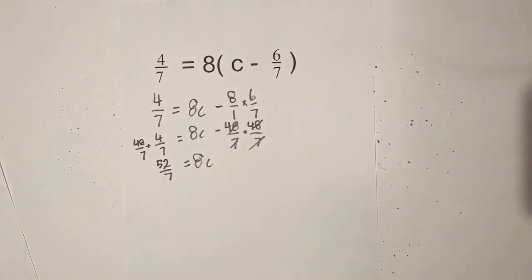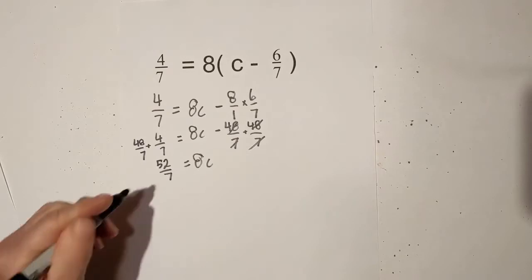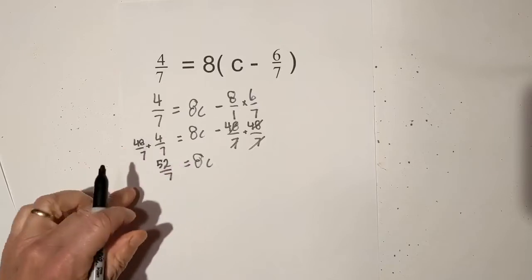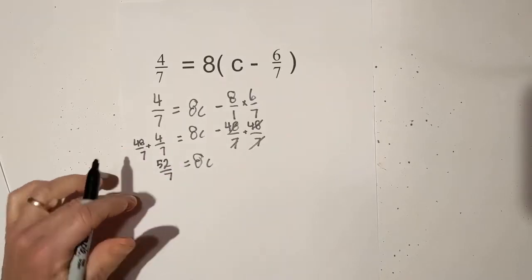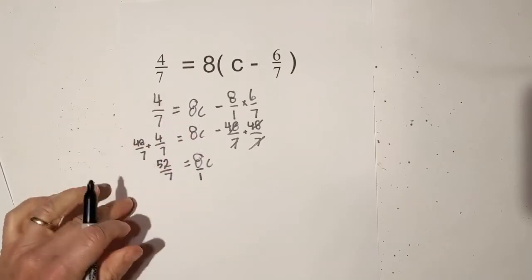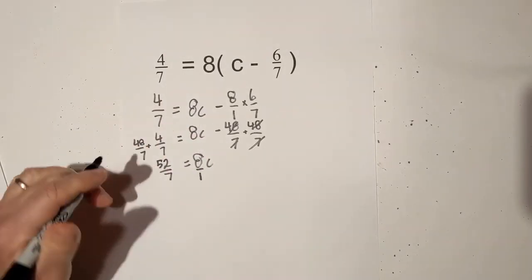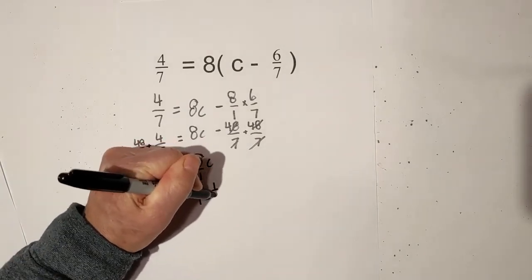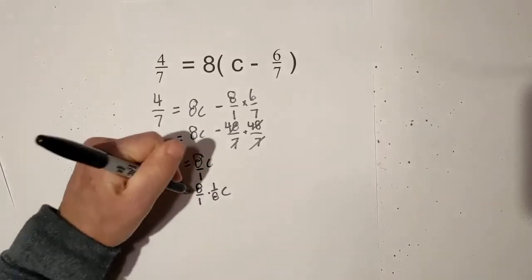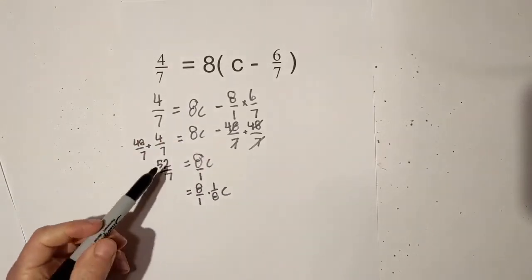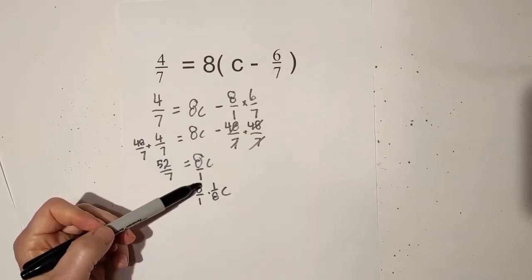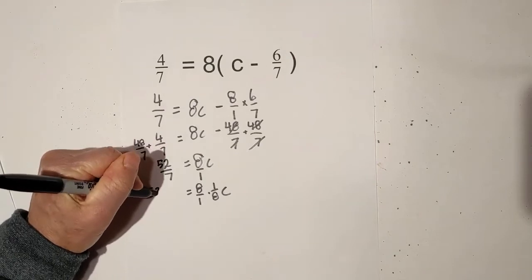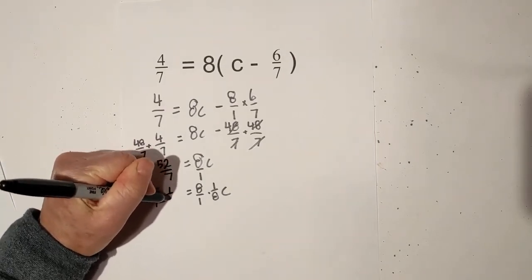Now what I need to do is I am going to get rid of the eight by dividing it by eight. So what I'm going to do is I'm going to put this eight over one and I'm just going to multiply it by its reciprocal. So let me rewrite that, so it will be eight over one times one over eight times c.